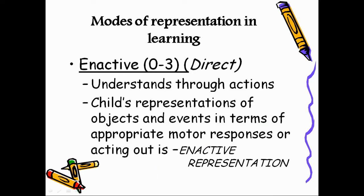The first stage is the enactive stage, from 0 to 3 years. It is also called the direct stage or the stage of action. Here the child understands through actions, and the child's representations of objects and events are in terms of appropriate motor responses or acting out. That is called enactive representation. The child defines objects in terms of action upon it.